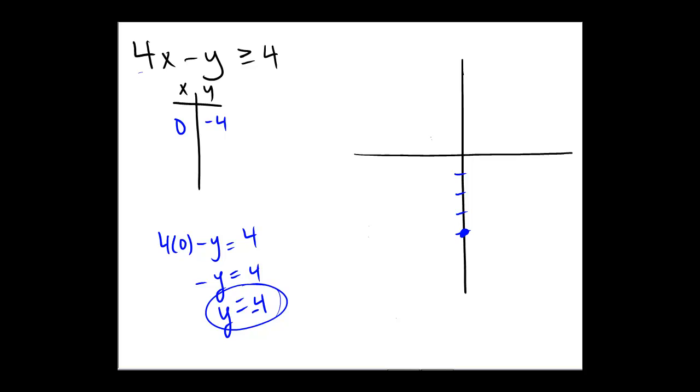On the other hand, for the x-intercept I'm going to replace y with 0. That would yield 4x - 0 = 4, and replacing with an equals we get 4x = 4 and x = 1. So that would indicate an x-intercept of 1.